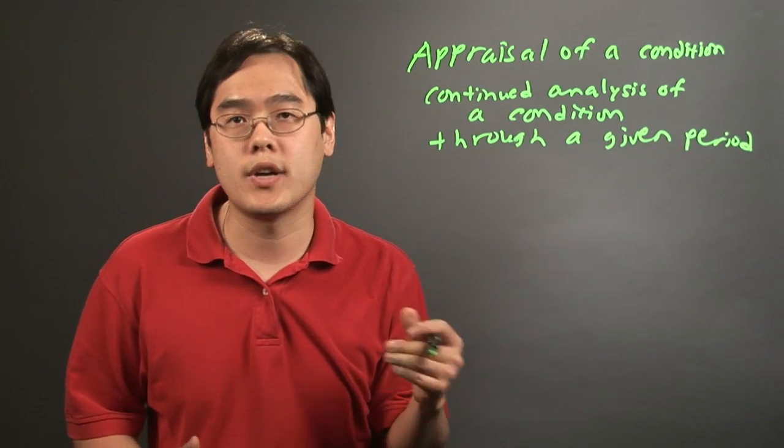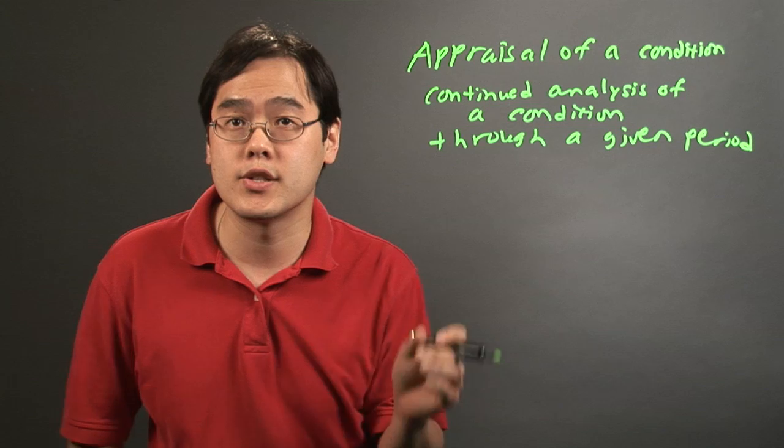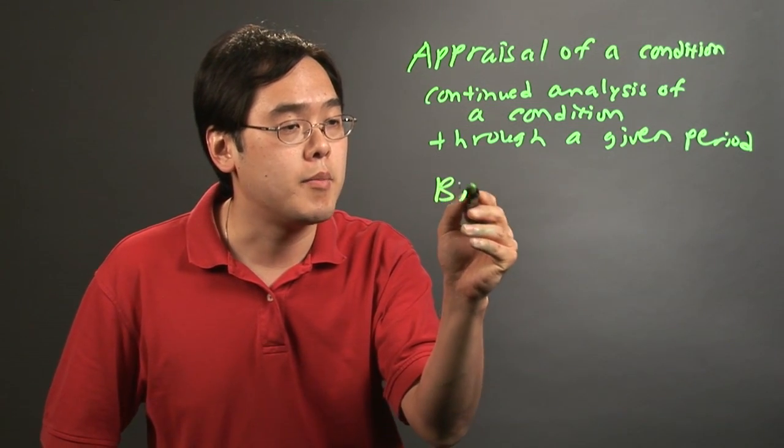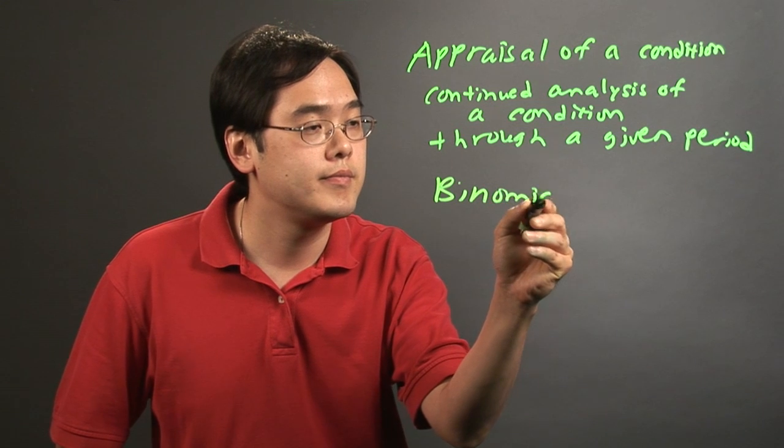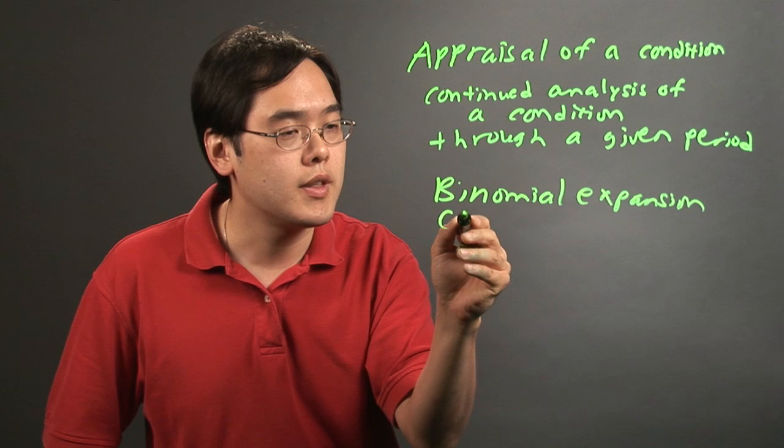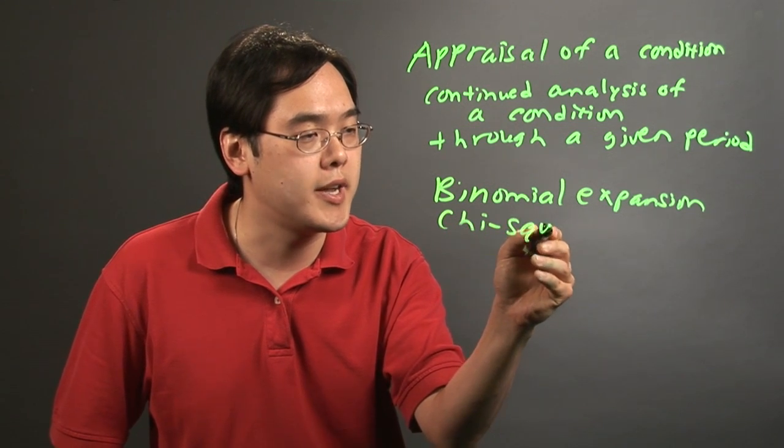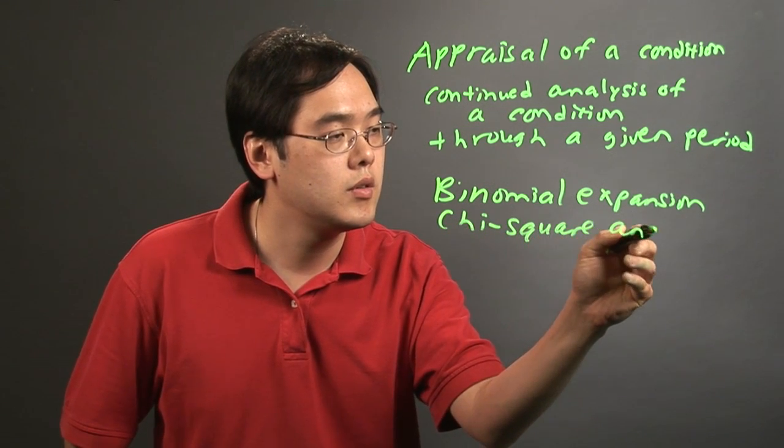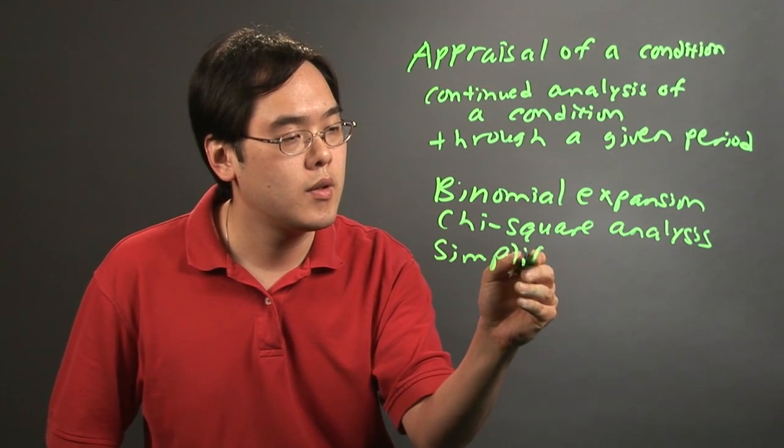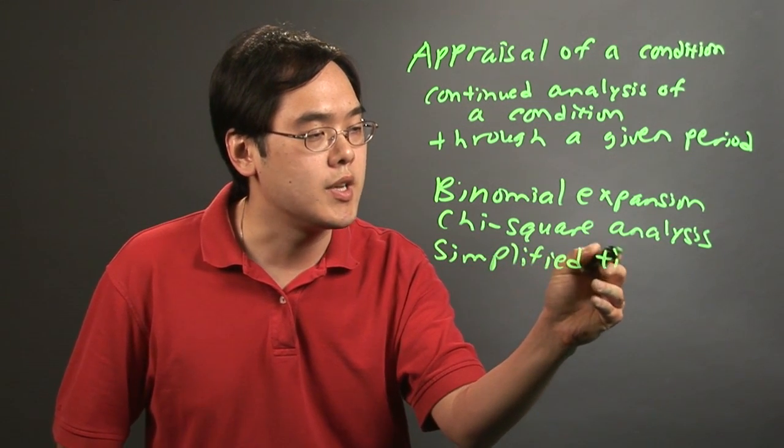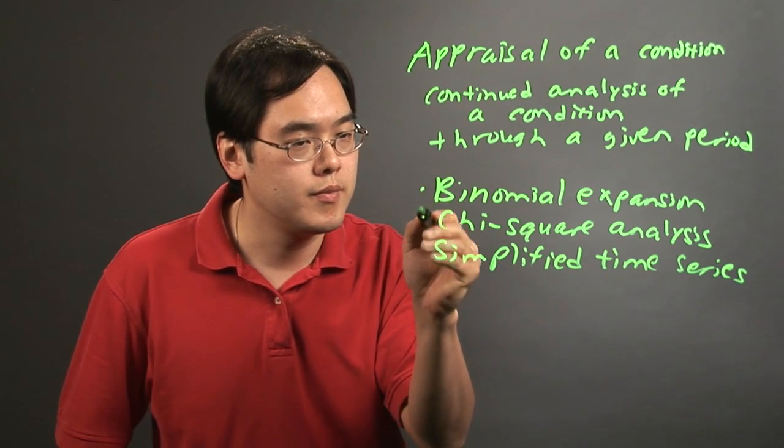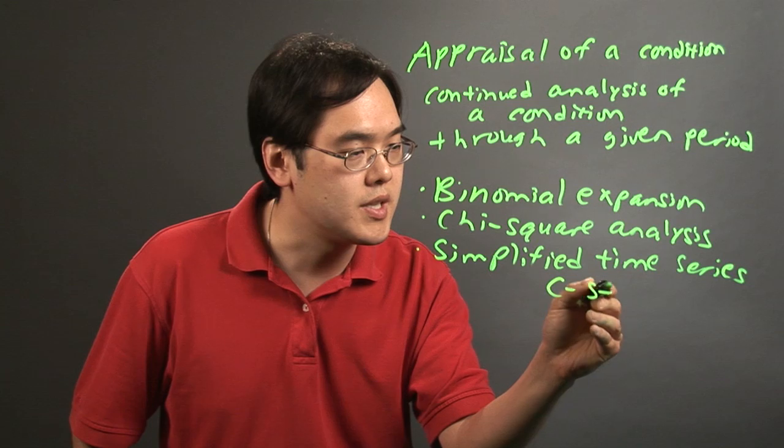What's often used in the single case continuous statistical analysis, there can be three methods that are commonly used: the binomial expansion, the chi-square analysis, and a simplified time series. What's used in this third option is the C statistic.